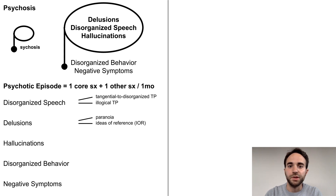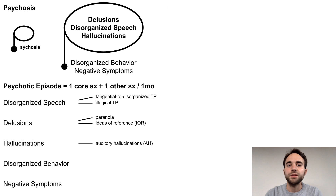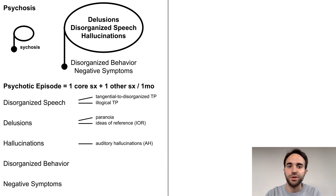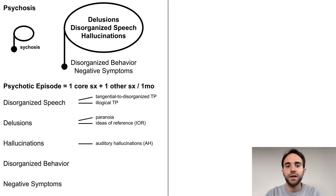Paranoia refers to beliefs that the patient is going to be harmed or persecuted by another individual or group. Ideas of reference refer to beliefs that particular cues in the patient's environment, such as gestures or comments, are directed at the patient. Hallucinations are perceptions that occur without an external stimulus. They may occur in any sensory modality, such as visual or tactile, but in psychotic disorders auditory hallucinations are most common, usually experienced as hearing voices distinct from the patient's own thoughts.